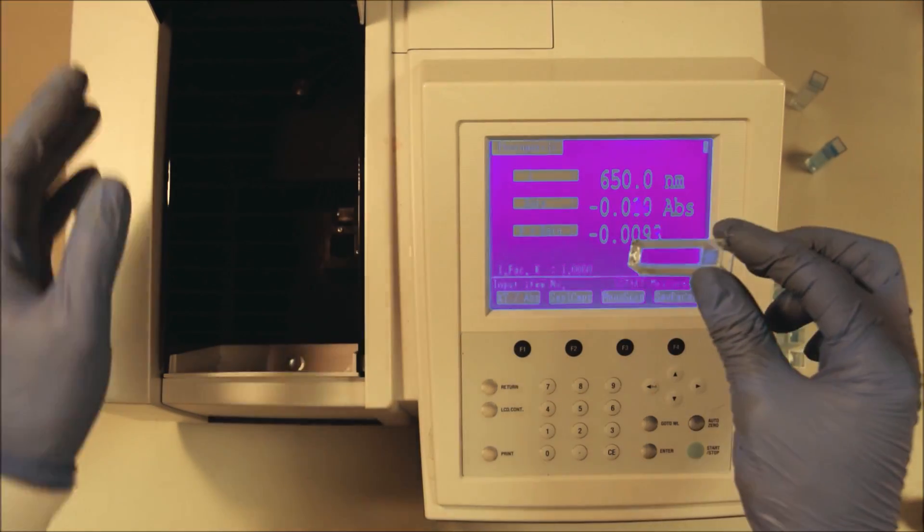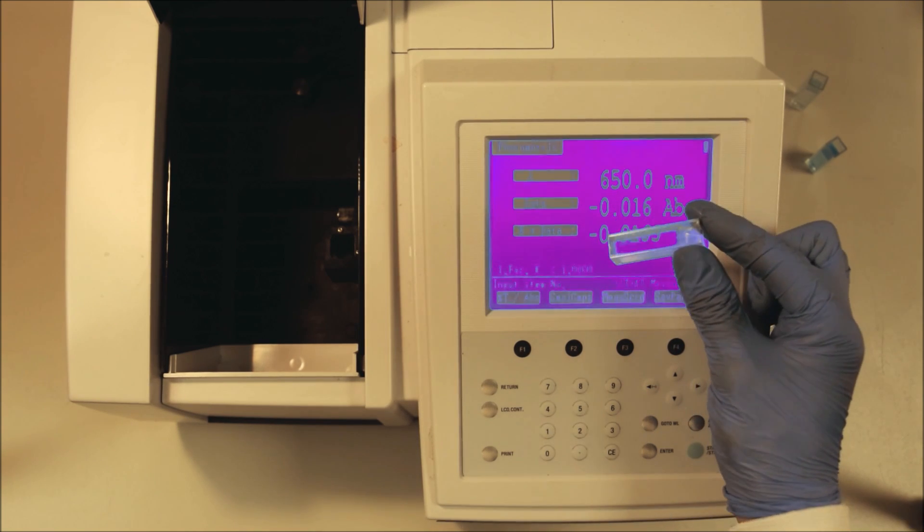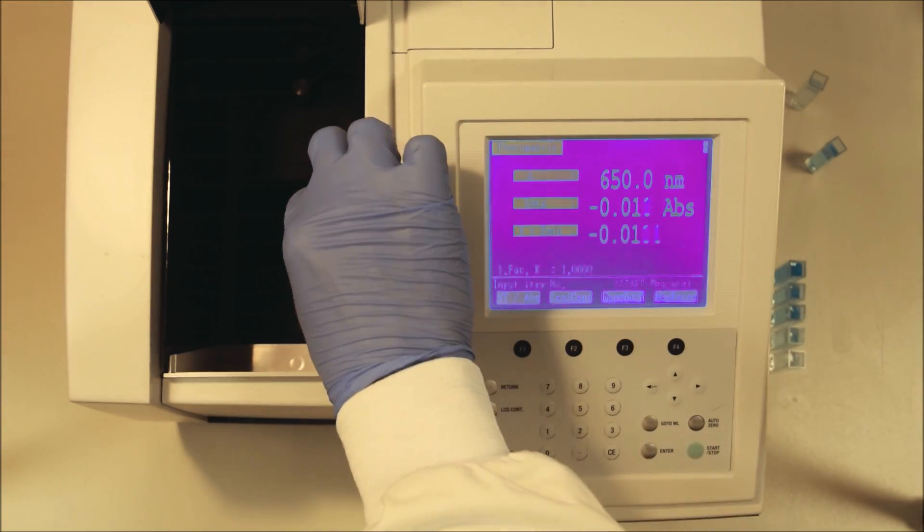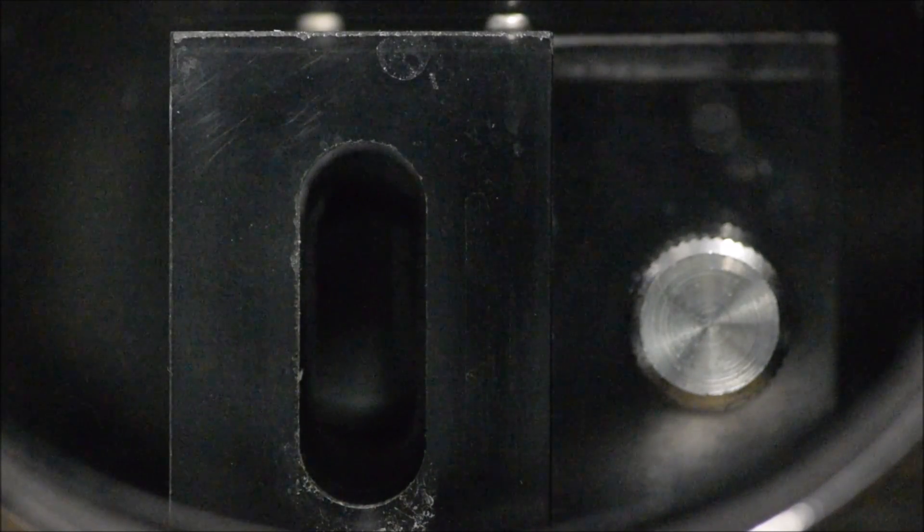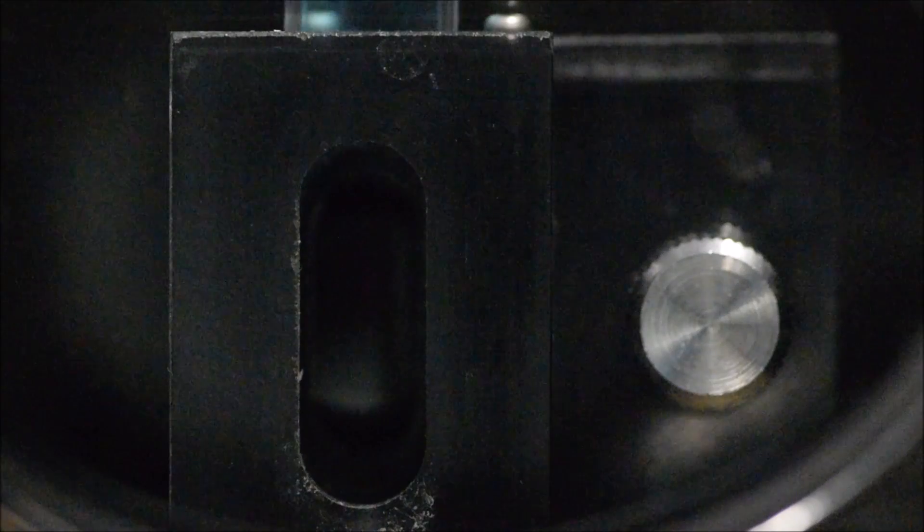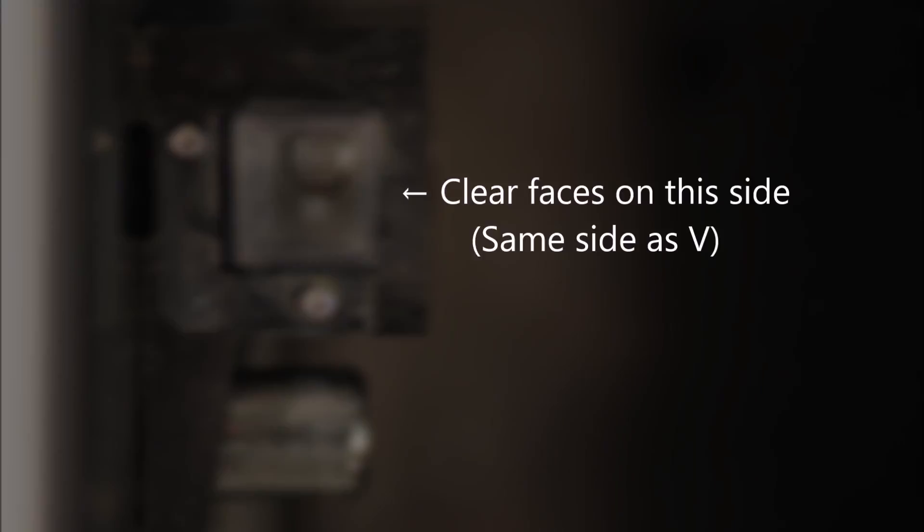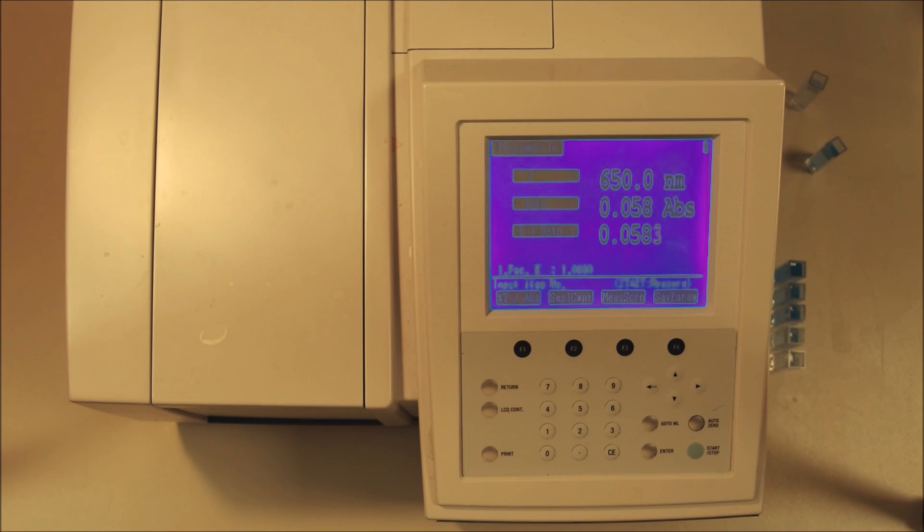The first thing we need to do is run a blank so we take a cuvette with deionized water in it and we put it into the machine. Again you can see one side is frosted and one side is clear. The frosted side must go left to right as we look at it now. If we take a quick look internally we can see what that looks like. We can see the clear face through the window along which the beam travels. Notice that the V is on the same side as the clear face is facing left to right from our perspective.